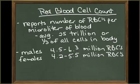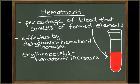In adult males, a normal red blood cell count contains 4.5 to 6.3 million red blood cells per microliter, whereas in females the count would be 4.2 to 5.5 million. The hematocrit is the percentage of a blood sample that consists of formed elements, mostly red blood cells.